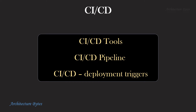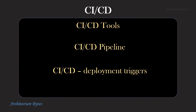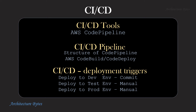Here we identify CI/CD tools, the CI/CD pipeline, and deployment triggers. AWS CodePipeline is our CI/CD service. We identify the structure of our code pipeline, which includes AWS CodeBuild and CodeDeploy. Our deployment triggers are as follows: deployment to the dev environment is triggered by code commit, while deployment to test and prod environments is triggered manually.